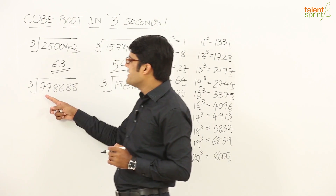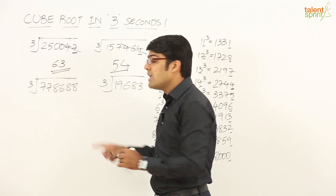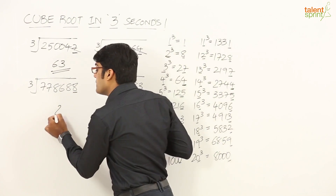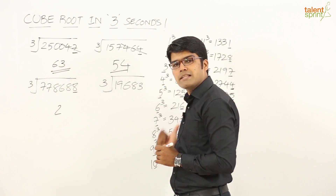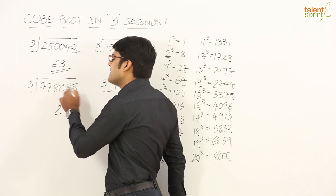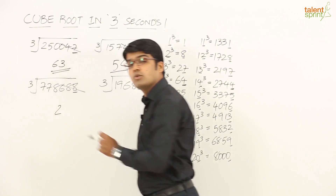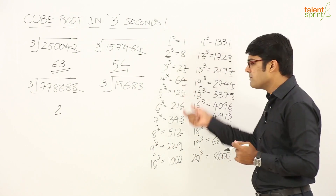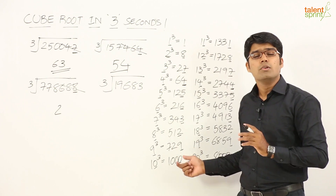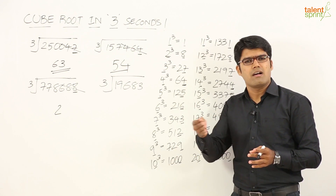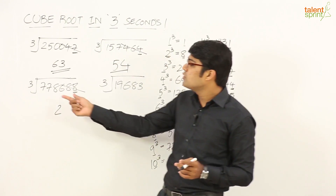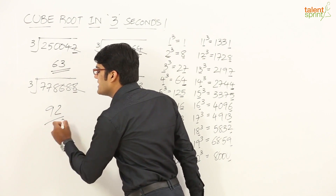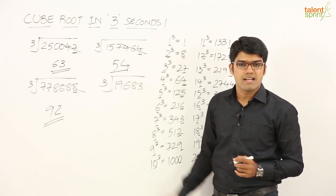Next question: 778688. The number ends in 8, and from our pattern we know the cube root should end in 2. Leave the last 3 digits — we're left with 778. The highest perfect cube less than 778 is 729, which is 9 cubed. These are figures you need to learn by heart — the cubes of 1 to 10. So 9 goes in the tens place, and the answer is 92.